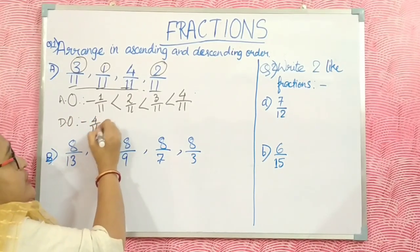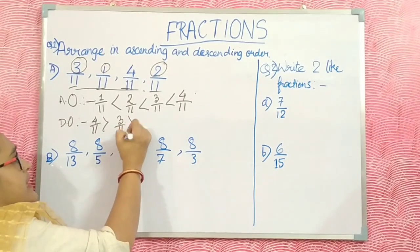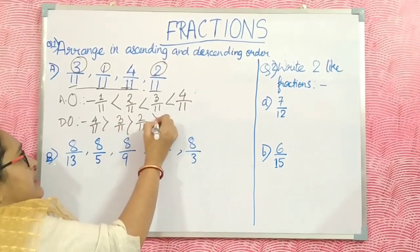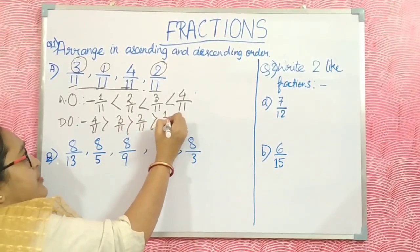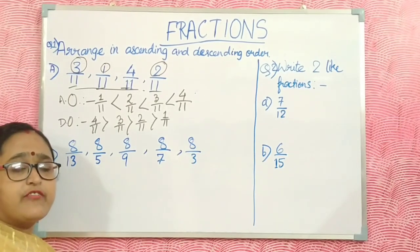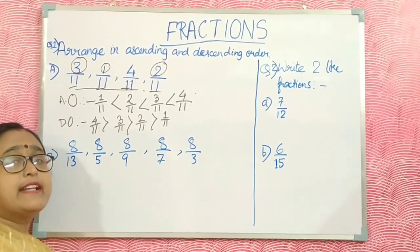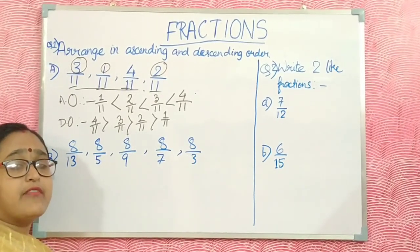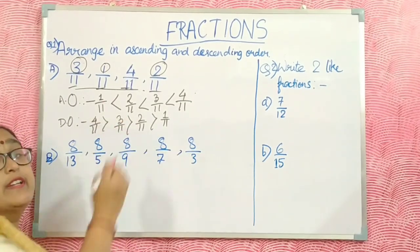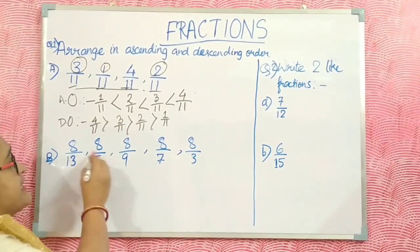For descending order, just write the reverse. When the denominator is same, the numerator is lowest means the fraction is lowest; numerator is greatest means the fraction is greatest.